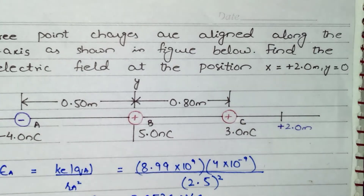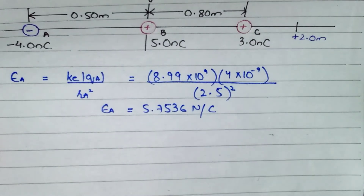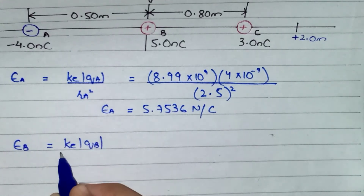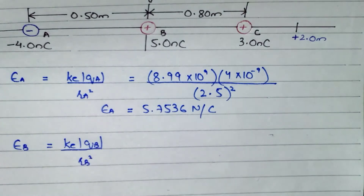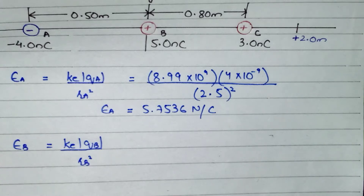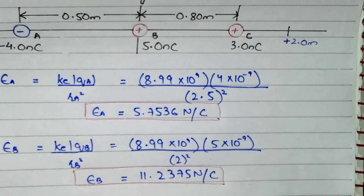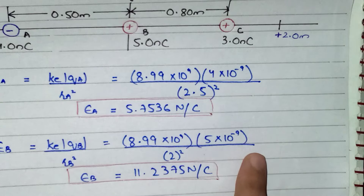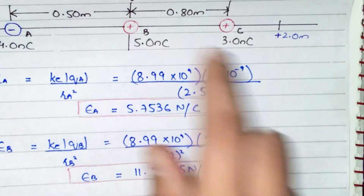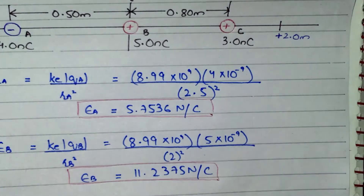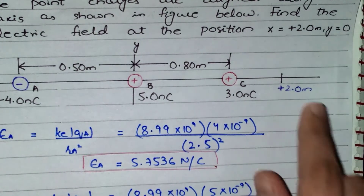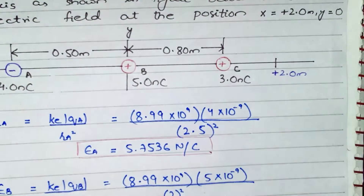For charge B, Eb equals ke times qb over rb squared. We substitute all values in standard units — 8.99 times 10 to the 9 is the constant ke. qb was 5 nano coulombs, converted to coulombs. Charge B is at the origin and the point is 2 meters from the origin, so the distance from charge B to the point is simply 2 meters.